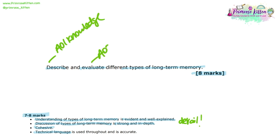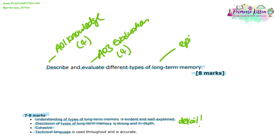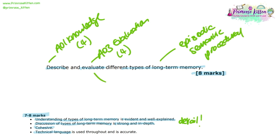There will be four AO1 knowledge marks and four AO3 evaluation marks. We know that the three types of long-term memory are episodic memory, semantic memory, and procedural memory, so there needs to be a clear description of these three. There then needs to be an evaluation and discussion around whether these are in distinct, separate memory stores or not.